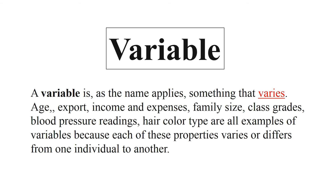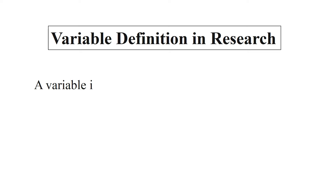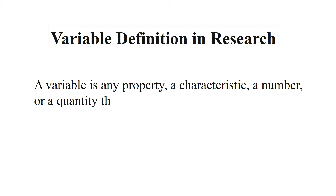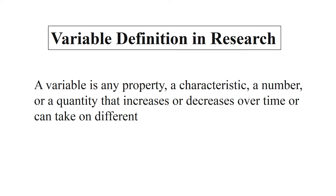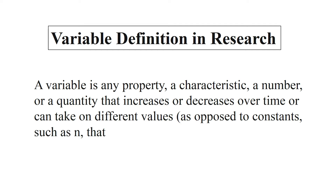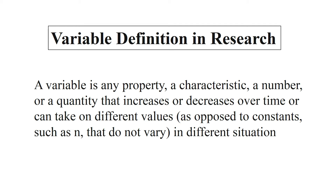In research, a variable is any property, characteristic, number, or quantity that increases or decreases over time or can take on different values, as opposed to constants — such as the value of π — that do not vary. Simply put, any property or quantity whose value fluctuates and does not remain constant is known as a variable.